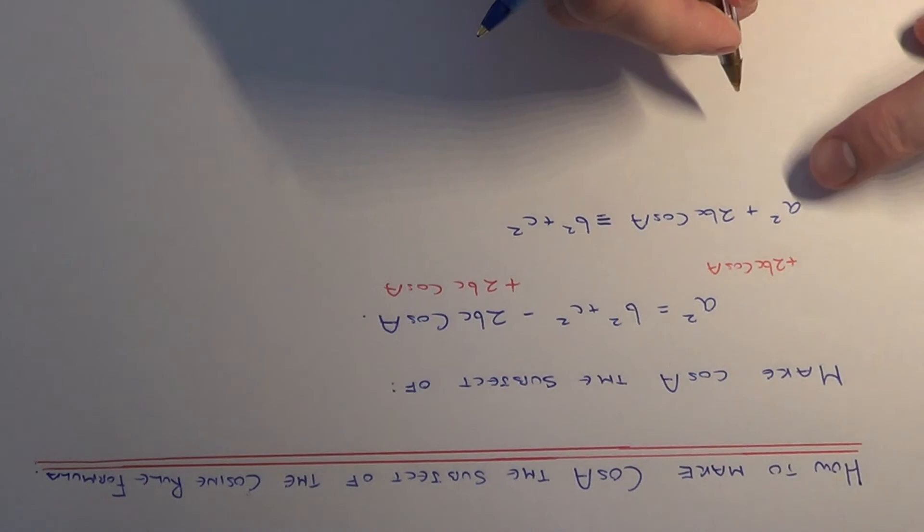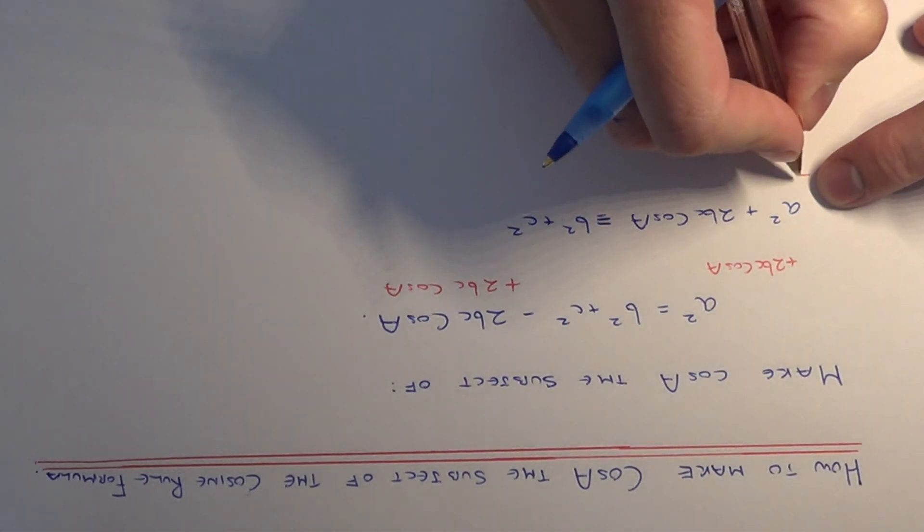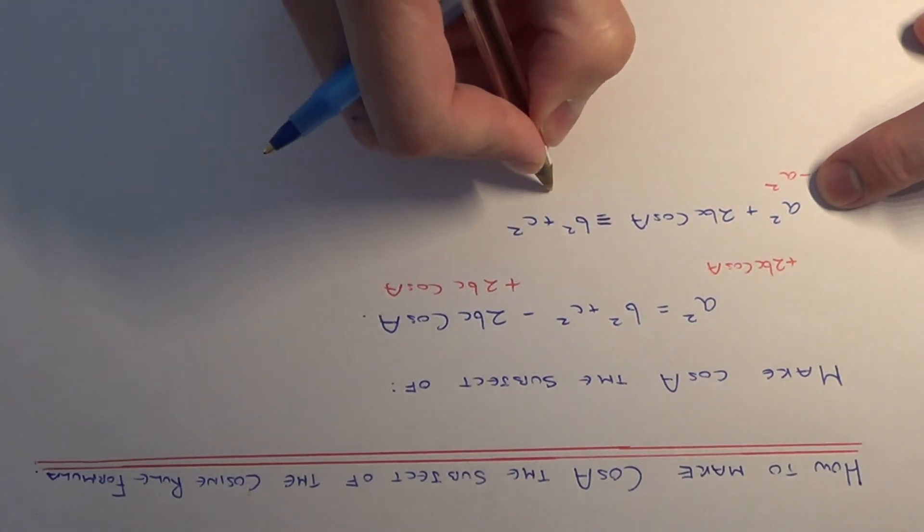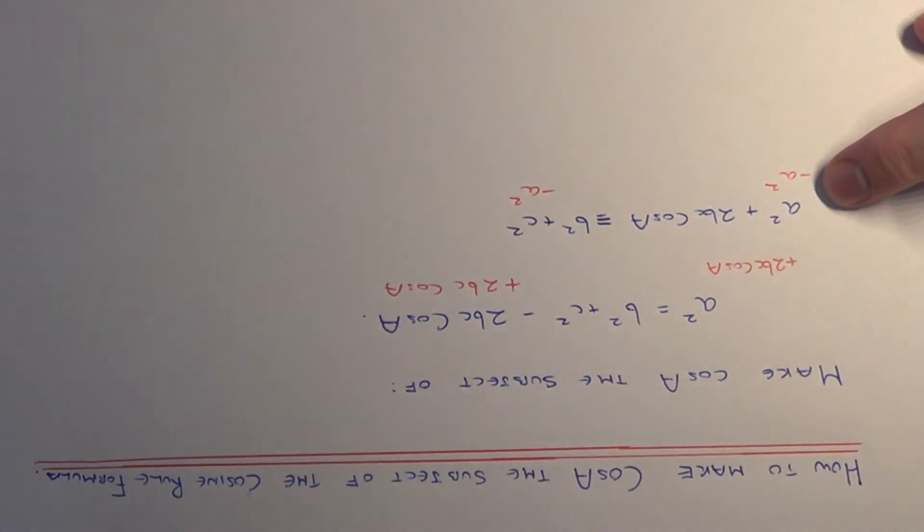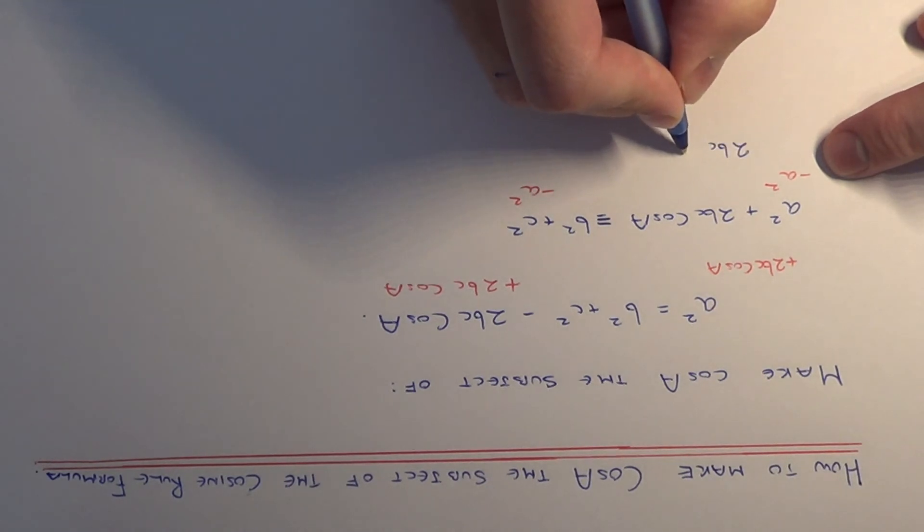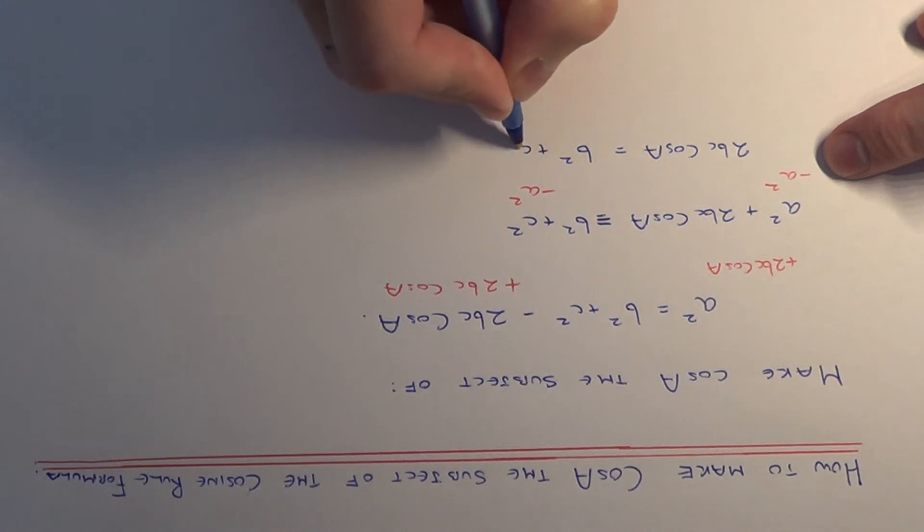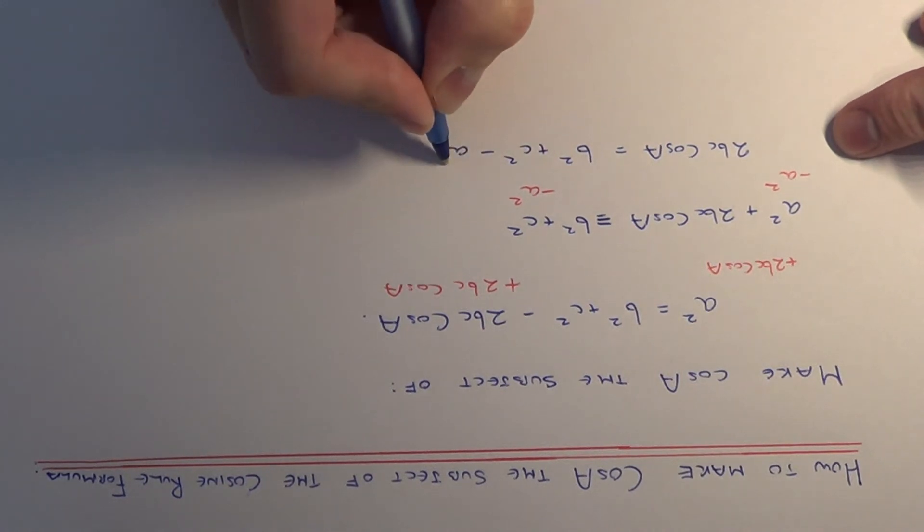The next thing we want to do is move the a squared to the right hand side. We can do this by subtracting a squared from both sides. This will give us 2bc cos A equals b squared plus c squared minus a squared.